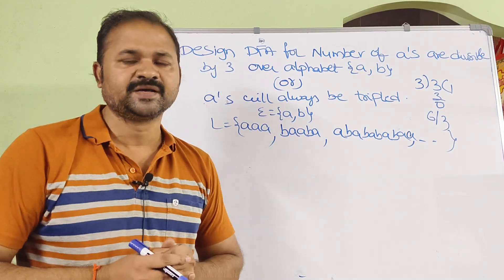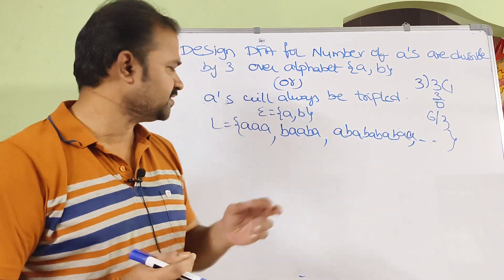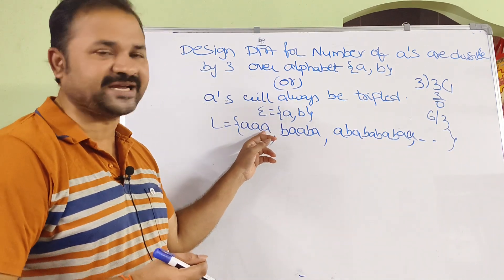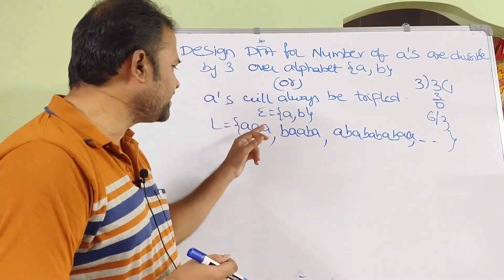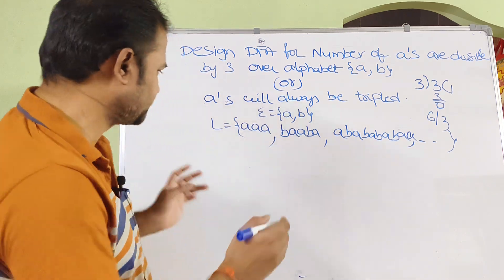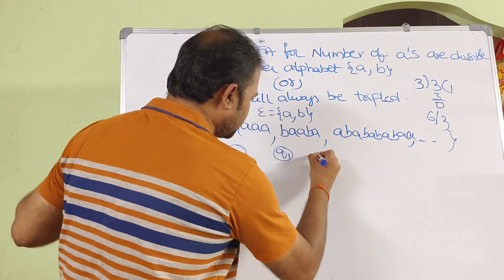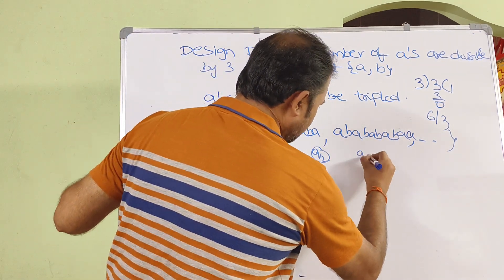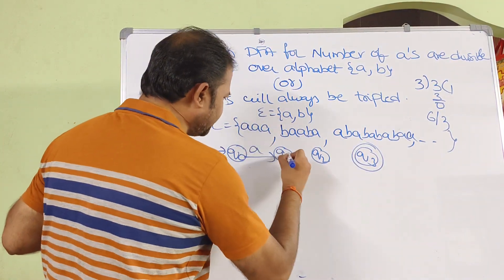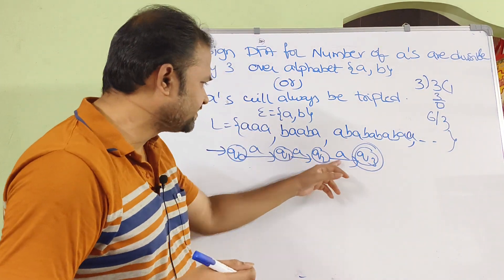Now let us see the DFA. First we have to find the number of states. In order to find the number of states, we consider the minimum string, which is AAA with length 3. So the number of states required is 3 plus 1, that is 4 states. The initial state is Q0, and the remaining states are Q1, Q2, Q3. Q3 is the final state. If we apply 3 A's, then we will reach the final state.